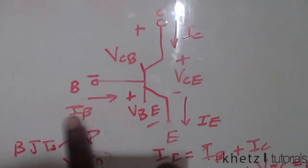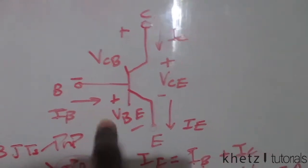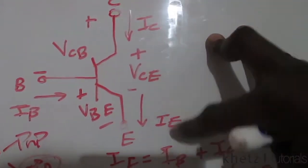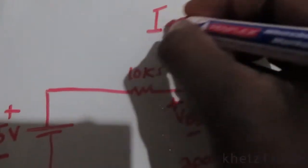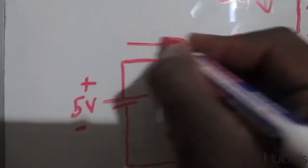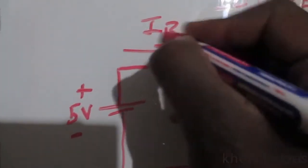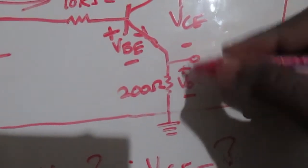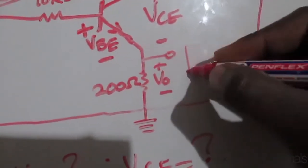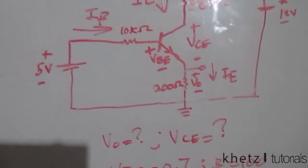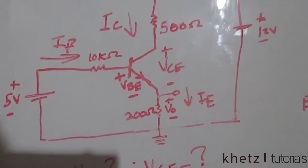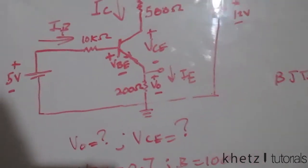Looking at the NPN BJT schematic on the circuit, i_beta goes in at the base, ie goes down at the emitter, and ic goes down at the collector. Applying the same convention to our circuit: ic goes down, i_beta comes in, and ie leaves at the bottom. Now we can start finding vo.